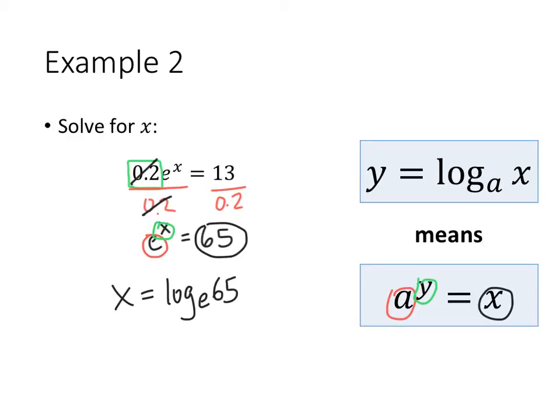Now log base e is special, because that's actually what we call the natural log. So that's ln of 65. And since I have an ln button on my calculator, if I wanted to know an approximate answer here, I could type that in my calculator, and I get that this is approximately 4.17.